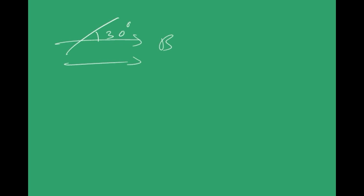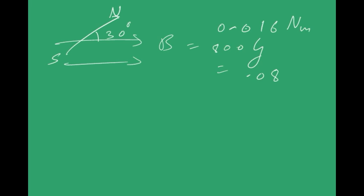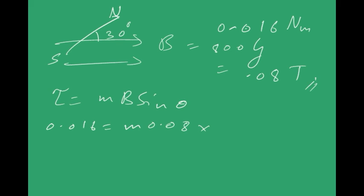Problem: A short bar magnet placed at 30° to an external magnetic field experiences a torque of 0.016 N·m. The magnetic field is 800 gauss = 0.08 T. Using τ = mB sinθ: 0.016 = m × 0.08 × sin30° = m × 0.08 × 0.5, giving m = 0.4 A·m².